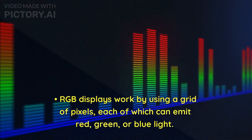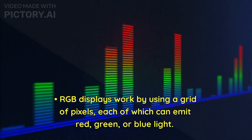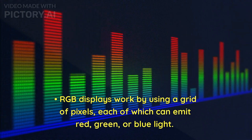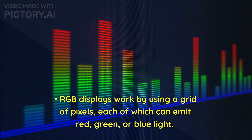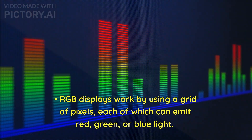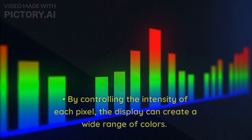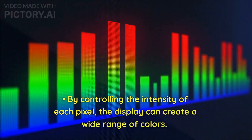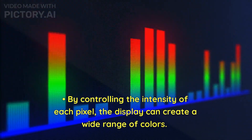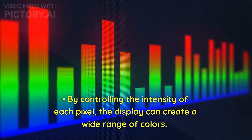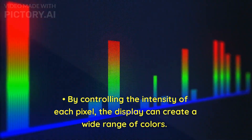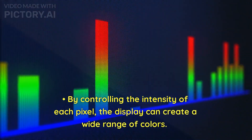RGB displays work by using a grid of pixels, each of which can emit red, green, or blue light. By controlling the intensity of each pixel, the display can create a wide range of colors.